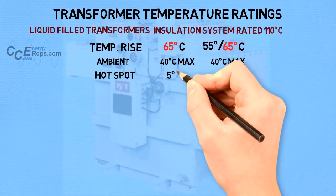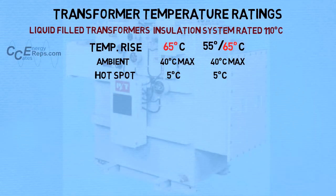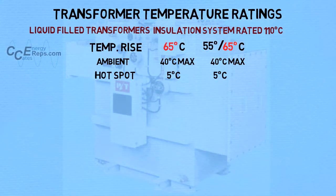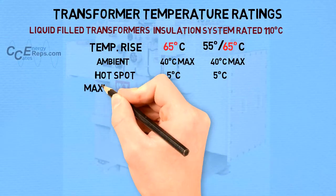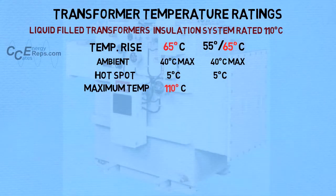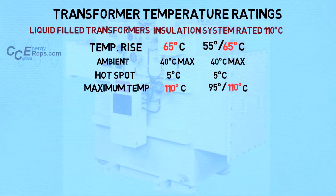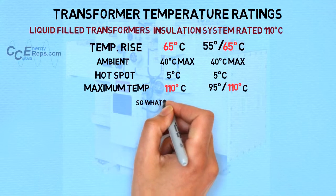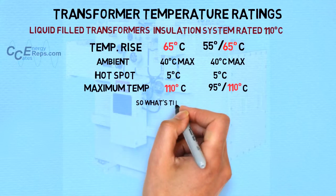Hotspot is the theoretical hottest point in the transformer, which adds 5 degrees C. When we add these values together, we get the maximum temperature the transformer should ever see. An exception may be if the unit is applied in a hot environment which exceeds 30 degrees C average and 40 degrees C max ambient, such as Texas.